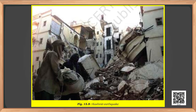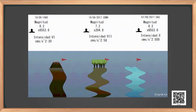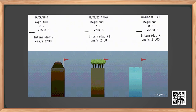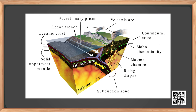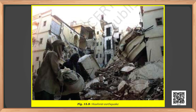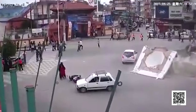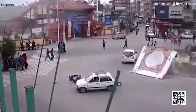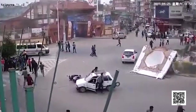An earthquake is the sudden shaking or trembling of the earth which lasts for a very short time. It is caused by a disturbance deep inside the earth's crust. Earthquakes occur all the time but are often not even noticed. However, major earthquakes are less frequent and can cause immense damage to buildings, bridges, dams, and people, resulting in great loss of both life and property. Earthquakes can also cause floods, landslides, and tsunamis.